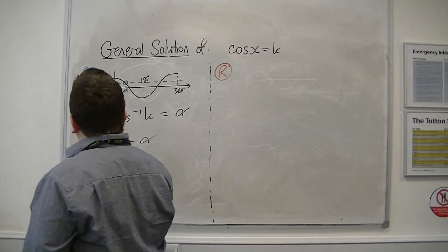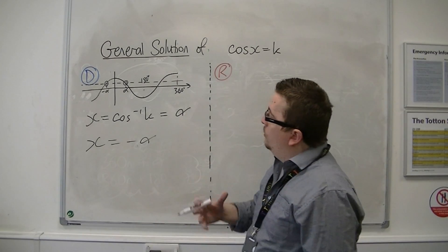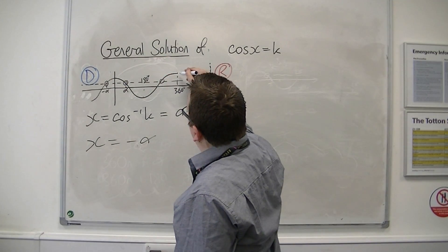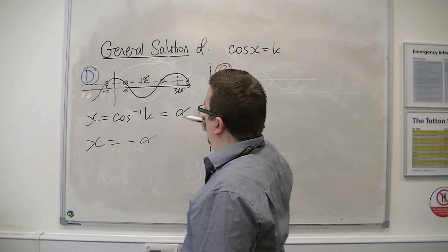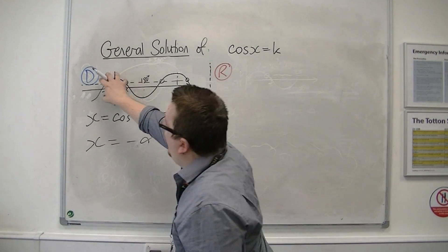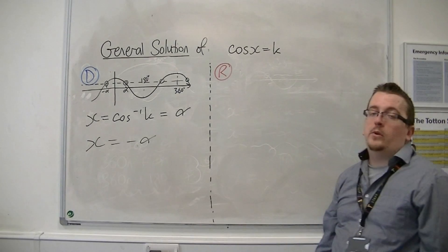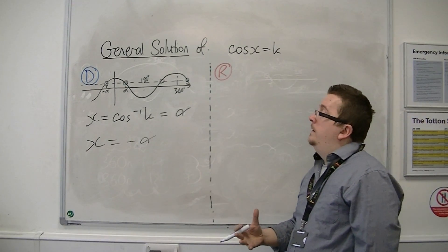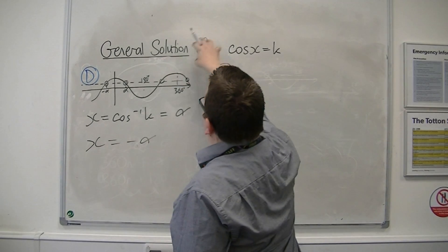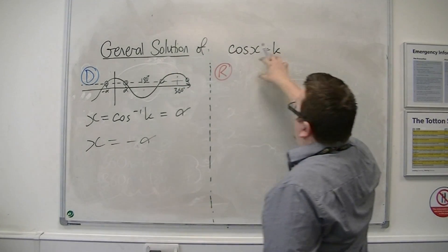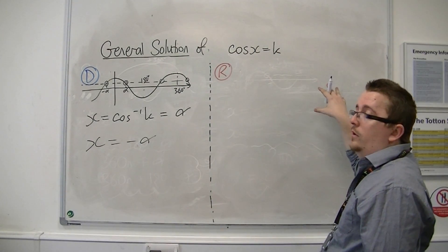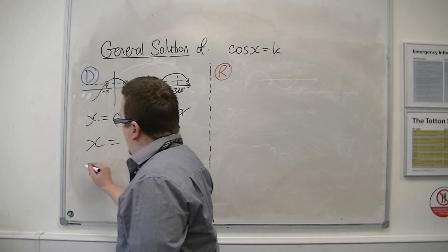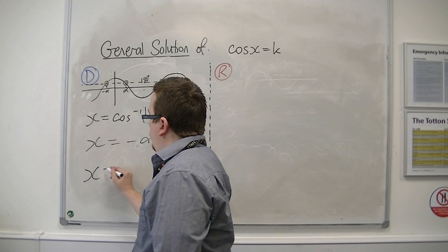So if I'm going to generalise this, in order to get all of the other solutions, so to get this solution and this solution, for example, I would add 360 to it, because that's the period of cosine. To get the next two, I'd add another 360. To get the next two, I'd add another 360, and so on. And I can do it into the other direction as well. So I want to add multiples of 360 to it.